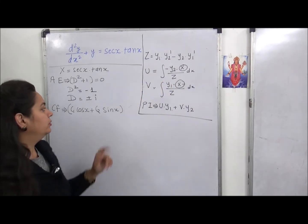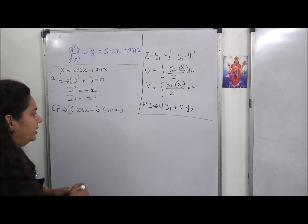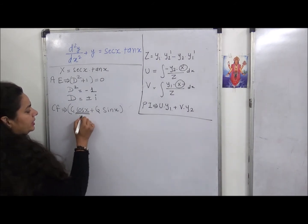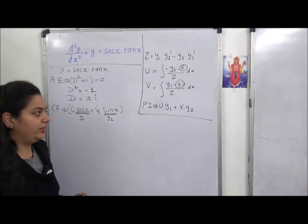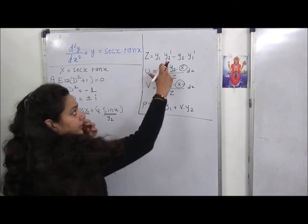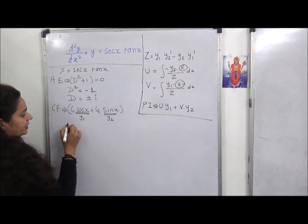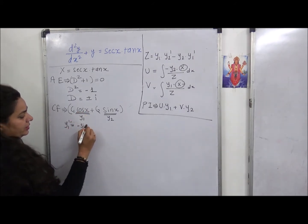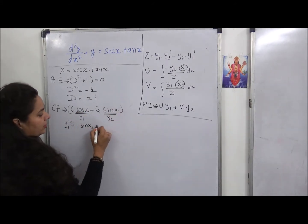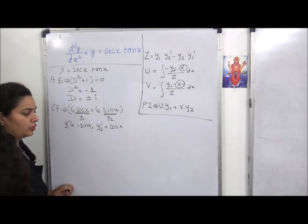Now, what are y1 and y2? The term multiplied with c1 is y1, and the term multiplied with c2 is y2. So y1 = cos x and y2 = sin x. We need both their derivatives: y1' = −sin x and y2' = cos x.